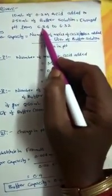See here we can see that when you add the acid to any solution acidic strength increases and pH decreases. So initial pH is 6.34 and now it is decreased to 6.32. So I think we have understood about the question.